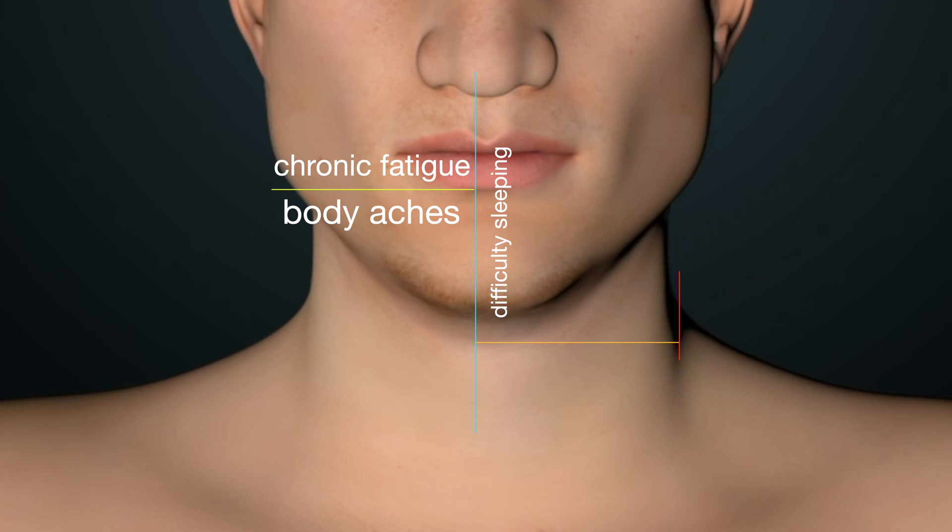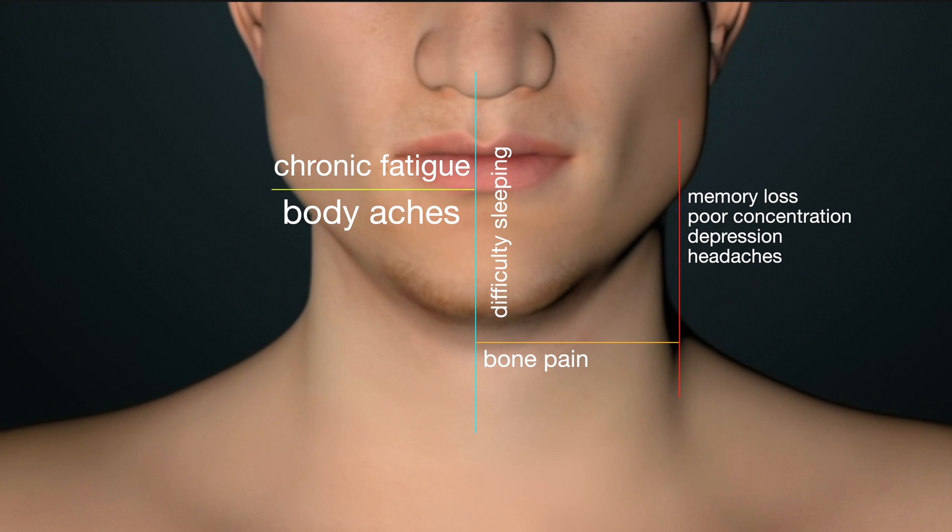Parathyroidectomy is a surgical procedure to remove one or more of the parathyroid glands. This is typically performed when a parathyroid gland is overactive and produces too much hormone, which can lead to several significant health problems.